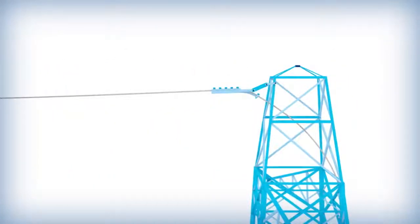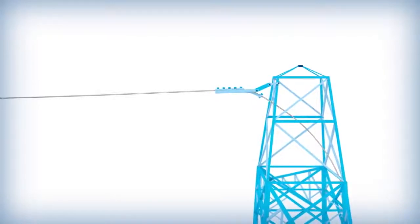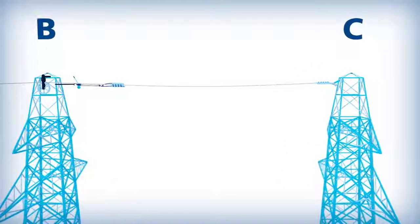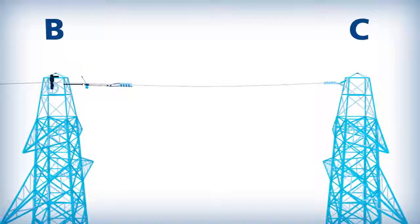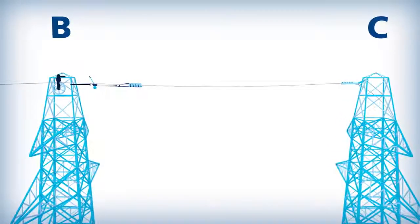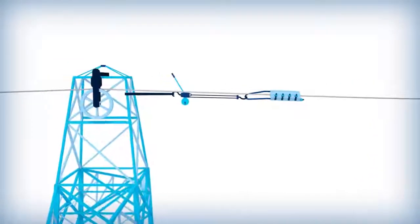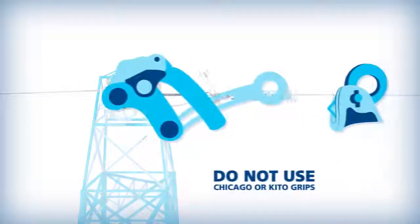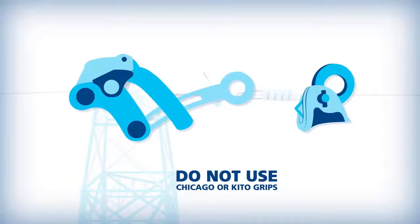To begin sagging the OPGW, a dead end should be placed on the last structure at the puller location. Sagging should be conducted on each dead end to dead end section, working back to the OPGW reel and tensioner location, and a come-along or pocketbook grip should be used to tension the cable. Chicago and Keto grips should not be used.